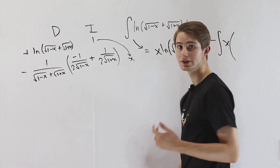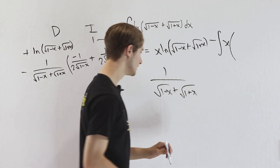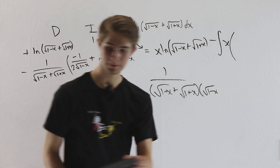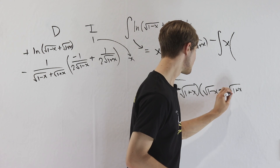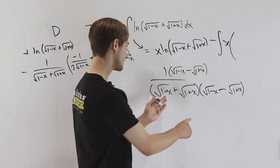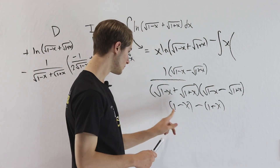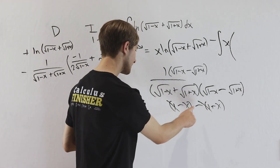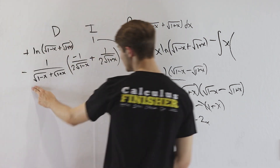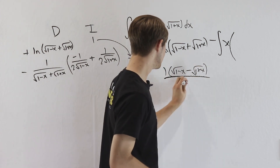We have two things multiplied together, so let's consider each part first. We have 1 over the square root of 1 minus x plus the square root of 1 plus x. To simplify this, we multiply the top and bottom by the conjugate of the denominator: the square root of 1 minus x minus the square root of 1 plus x. On the bottom, we get the square root of 1 minus x squared minus the square root of 1 plus x squared. The 1s cancel, and negative x minus x gives negative 2x. So the result is the square root of 1 minus x minus the square root of 1 plus x, all over negative 2x.